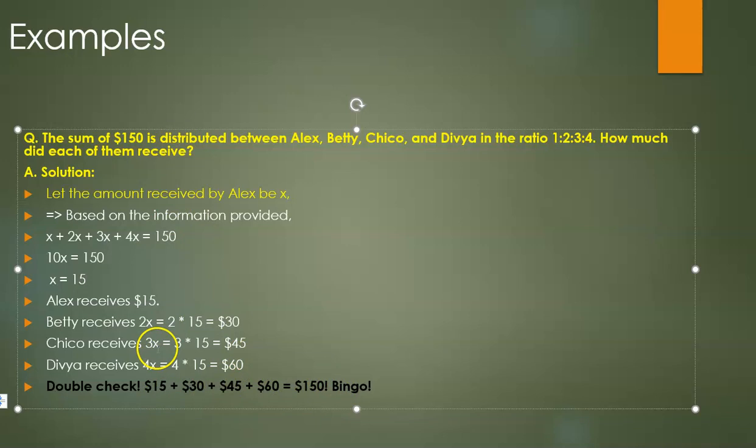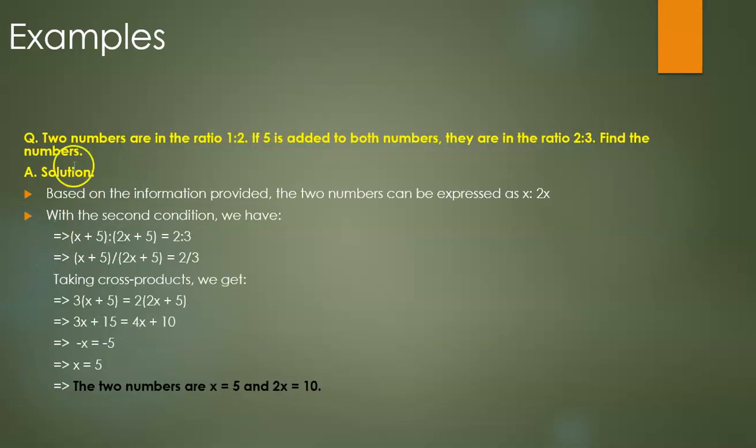Another example: you have two numbers which are in the ratio 1:2, and we've been told that if 5 is added to both numbers, they are then in the ratio 2:3. We're supposed to find the numbers.